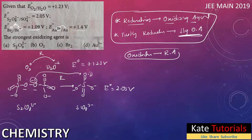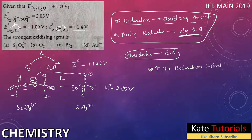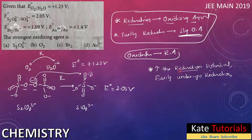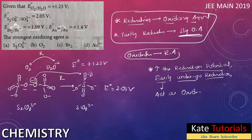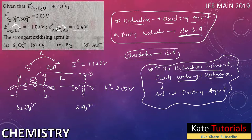This is very important — make a star mark here. Greater the reduction potential, the more easily that element undergoes reduction. If it easily undergoes reduction, it acts as an oxidizing agent. So greater reduction potential means it acts as a stronger oxidizing agent.